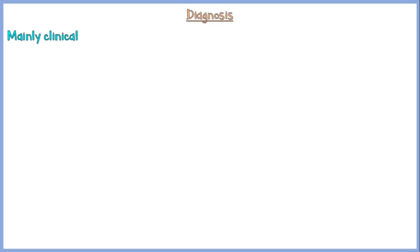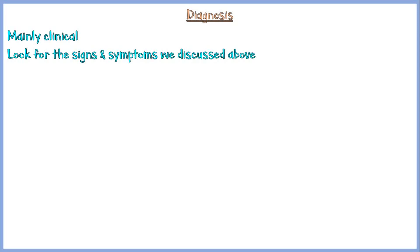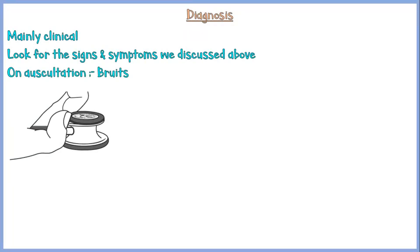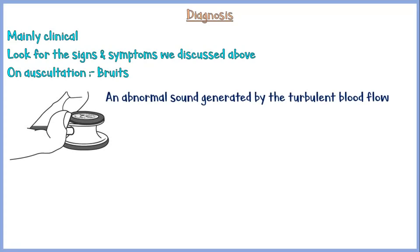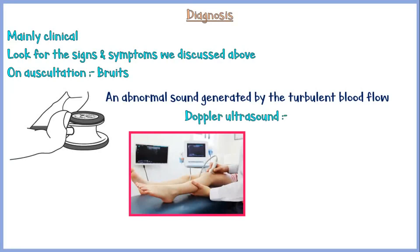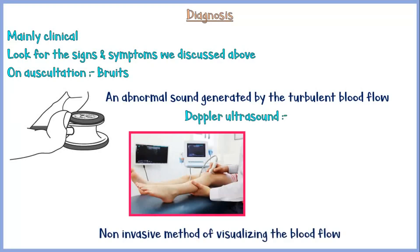Diagnosis of peripheral vascular disease is mainly clinical. Look for the signs and symptoms discussed above. In addition, you may hear a bruit on auscultation of the affected artery — an abnormal sound generated by turbulent blood flow. If needed, you can perform a Doppler ultrasound test, which is a non-invasive method of visualizing blood flow.